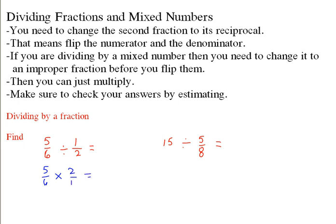There's a 2 on the top and a 6 on the bottom. I know 2 goes into 6, so that's now 3. This is now going to be 1. So I have 5 over 3, which is equal to 1 and 2/3.